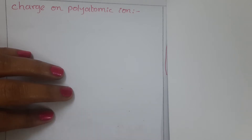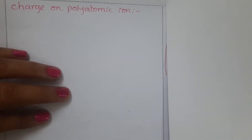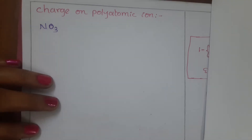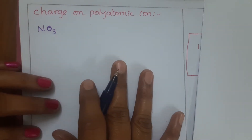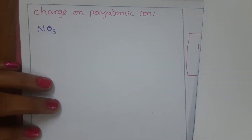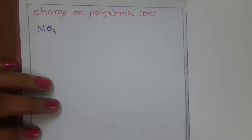At the end of this video I am going to explain one exception case. Now, take NO3 — whether it contains a minus 1 charge or minus 2. Let us see how we can find that.